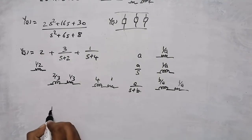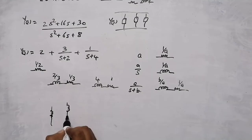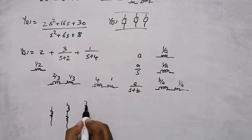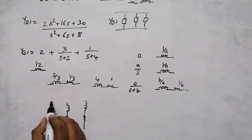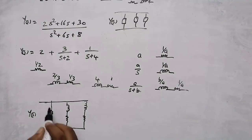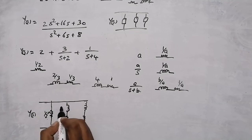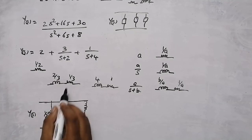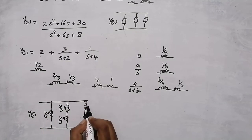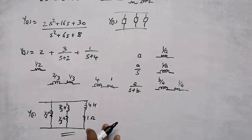In Foster Form 2, all these admittances are connected in parallel. The first branch is a resistor of 1/2 Ω. The second branch is a series combination of a 1/3 Ω resistor and 2/3 H inductor. The third branch is a series combination of a 1 Ω resistor and 4 H inductor. This is the complete Foster Form 2 network.